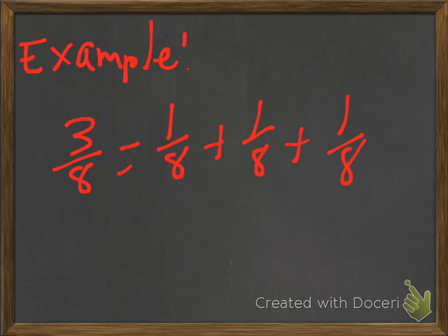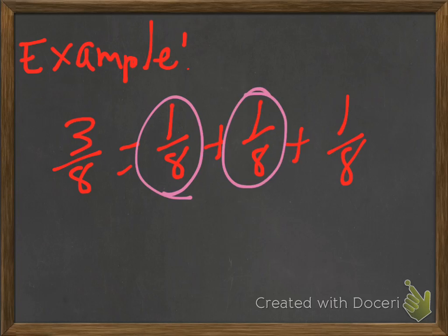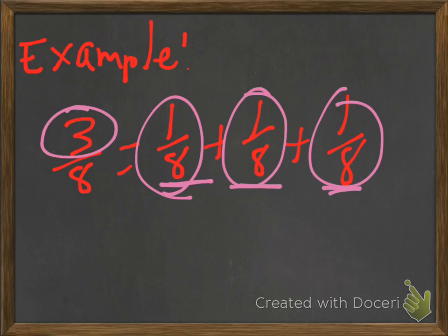For example, we know that 3/8 equals 1/8 plus 1/8 plus 1/8. Since the denominators are the same — they're like denominators — all we have to do is add the numerators. That's where we get our 3, and the denominator 8 stays the same.